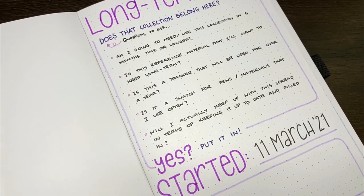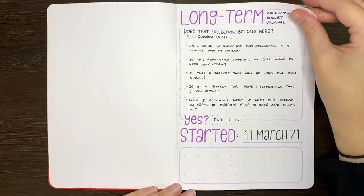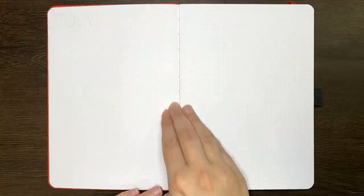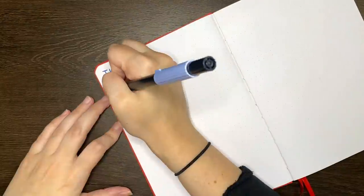I also included a start date just for reference, and then after this it was over the page and on to setting up my index. Now, I don't normally use an index, especially not in my day-to-day bullet journal, and in my last long-term collections bullet journal, I very much only put an index in because the journal I was using had a pre-printed one.